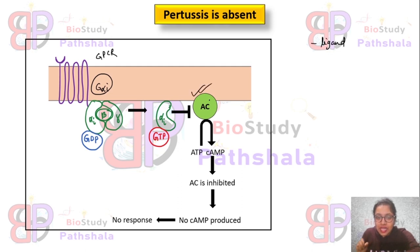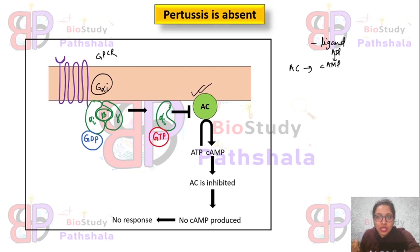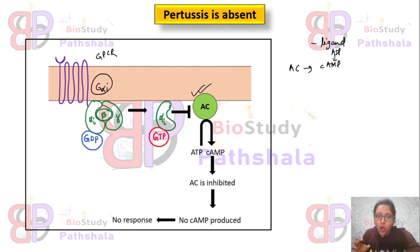Adenylate cyclase normally produces cAMP from ATP. Here, the Gi alpha subunit bound with GTP shows an inhibitory effect on AC, and the inhibited AC cannot produce cyclic AMP. Therefore, the intracellular concentration of cyclic AMP will be reduced, or no cyclic AMP will be observed.